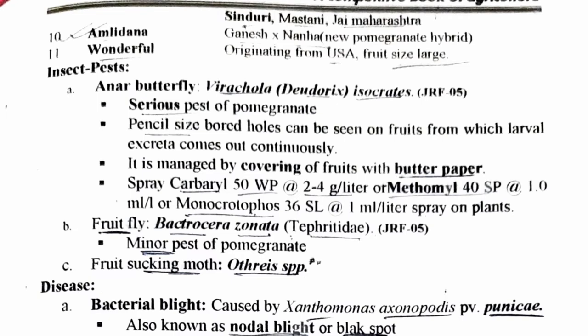Regarding insect pests: for pomegranate, the anaar butterfly, scientifically known as Virachola isocrates (also called Deudorix isocrates), is a serious pest. In affected fruits, a pencil-size hole appears from which larval excreta come out. Management: cover the fruits with butter paper, or spray Carbaryl 50WP at 2-4 gram per liter, or Methomyl 40SP at 1 ml per liter, or Monocrotophos 36SL at 1 ml per liter.